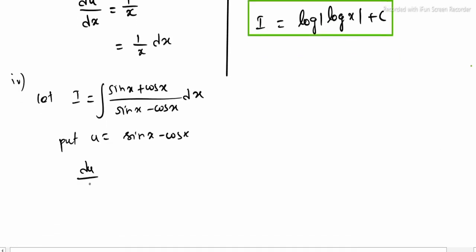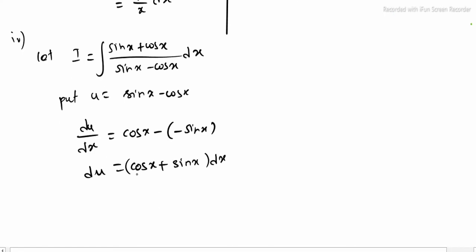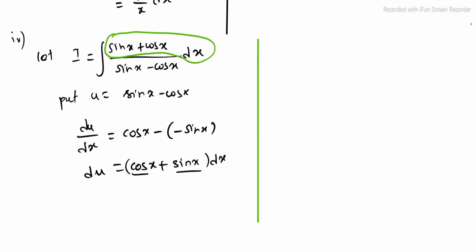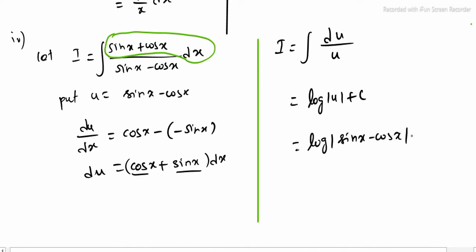Differentiating u: du/dx equals cos x minus (−sin x), which is cos x + sin x. So du equals (cos x + sin x) dx, which is the same as (sin x + cos x) dx — exactly the numerator. Replacing numerator with du and denominator with u: i equals the integral of du/u, giving log|u| + c. Replacing u: log|sin x - cos x| + c. This is the Sub-question 4 integrate value.